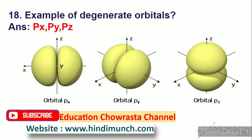Next question: give an example of degenerate orbitals. Degenerate orbitals kii example seen tii. Answer: p orbitals.